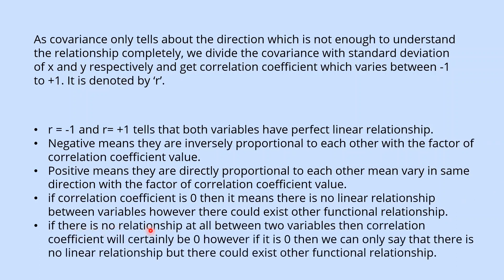If there is no relationship at all between two variables, then correlation coefficient will certainly be 0. However, if it is 0, then we can only say that there is no linear relationship but there could exist other functional relationships.